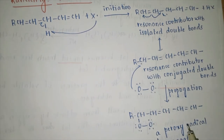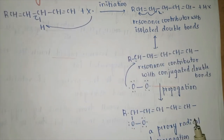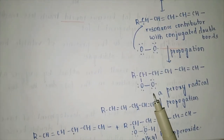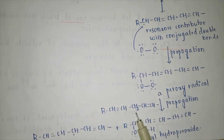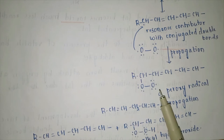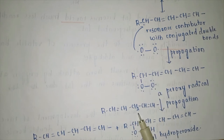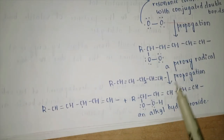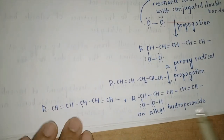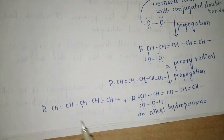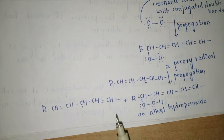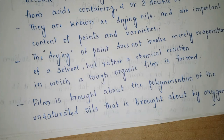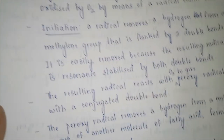Once the free radical is at the terminal position, atmospheric oxygen attacks, giving a peroxy radical. This peroxy radical attacks a second fatty acid molecule, abstracting the proton from the active methylene group and converting it into an alkyl hydroperoxide — a bad-smelling system. A new free radical is introduced, and the rancidity mechanism continues, degrading the whole fatty acid system.